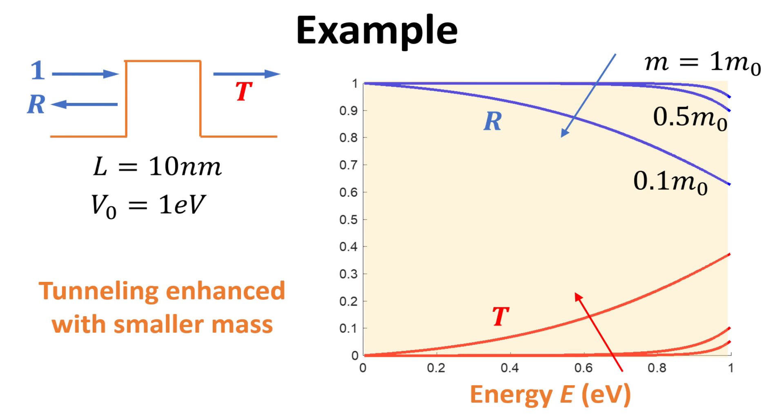Now, let's focus on the energy region within the barrier of less than one electron volt. We see that the transmitted current is not zero, despite the electron energy being smaller than the barrier. This phenomenon is called tunneling. We see that the tunneling current increases when the electron mass is reduced. This is a quantum mechanical phenomenon and has no classical analog.